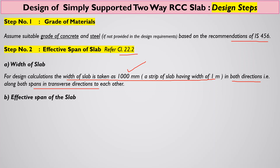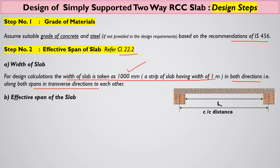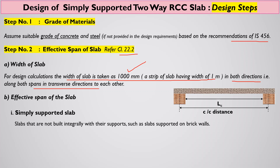The second point is how to evaluate or calculate the effective span of the slab. Here, the same guidelines used in the case of a one-way slab or a singly reinforced beam apply. For a simply supported two-way slab — which is our case, where slabs are not built integrally with their supports and are directly placed on brick walls — these slabs fall under the category of a simply supported slab.